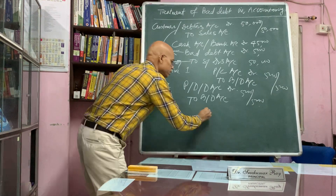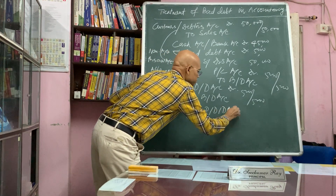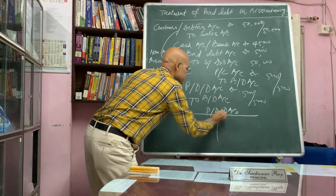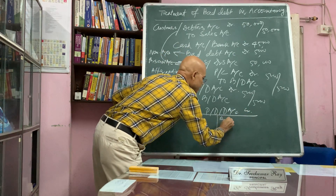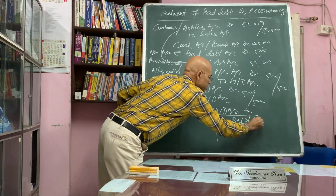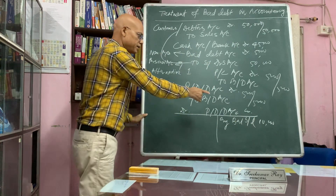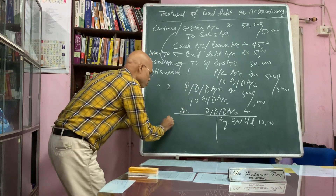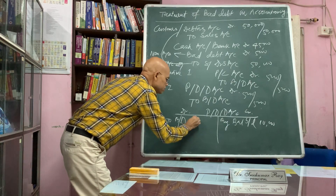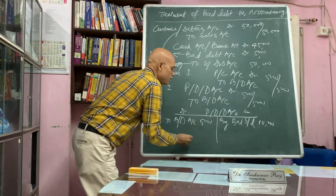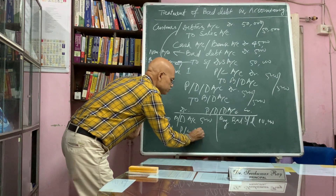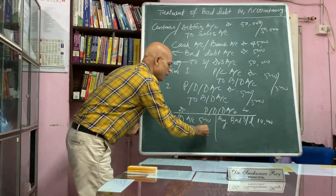I am showing the position of the provision for doubtful debts account. Suppose the opening balance was 10,000 — by balance 10,000. Now bad debt of 5,000 occurs, so the entry is: provision for doubtful debts account debit, to bad debt account 5,000.